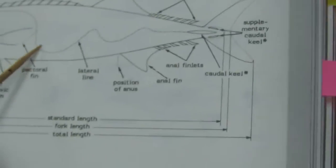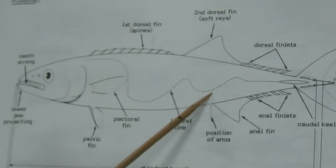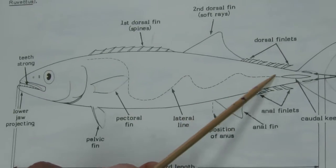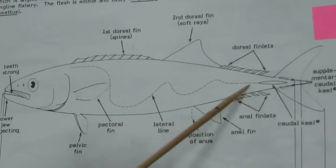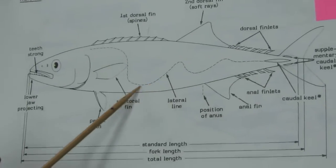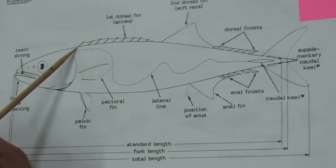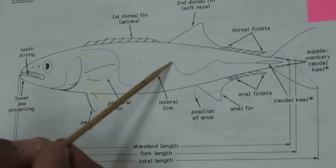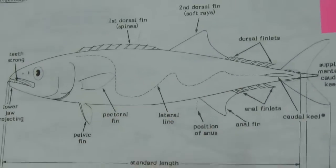Next is Gempylidae. The lateral line is single or double, ending at the caudal fin base. In some species it has a very marked twisting — a macula-like twisting.